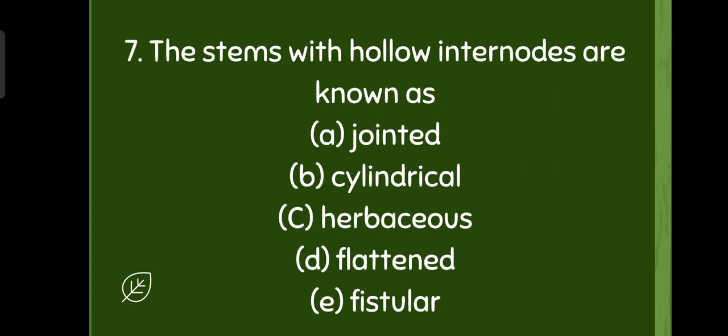The stems with the hollow internodes are known as fistular. Option E is the correct one, fistular, and the example is the bamboo. They have hollow internodes.